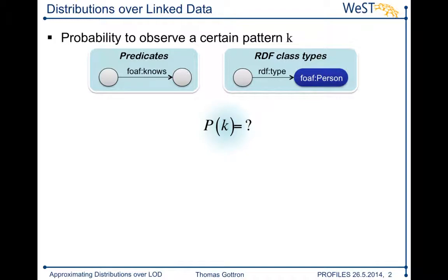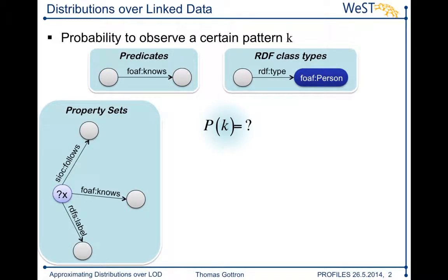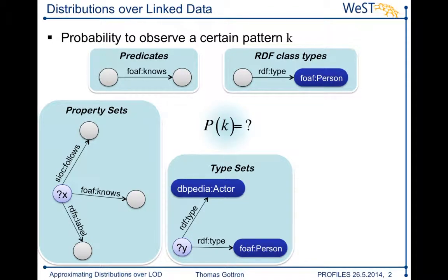While predicates and class types are still relatively simple patterns, you can actually combine them to make more complex patterns. For example, if you combine the predicates you end up with so-called property sets, and here you might want to know: if I pick a random node in the RDF graph composed by the linked data cloud, how likely is it to be modeled using exactly the properties FOAF follows, FOAF knows, and RDFS label? Or transferred to class types, how likely is it to be of type DBpedia actor and FOAF person?